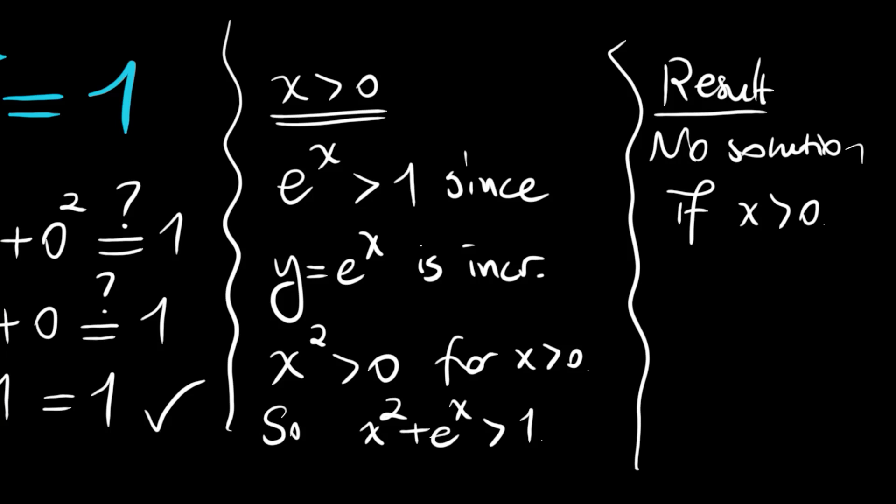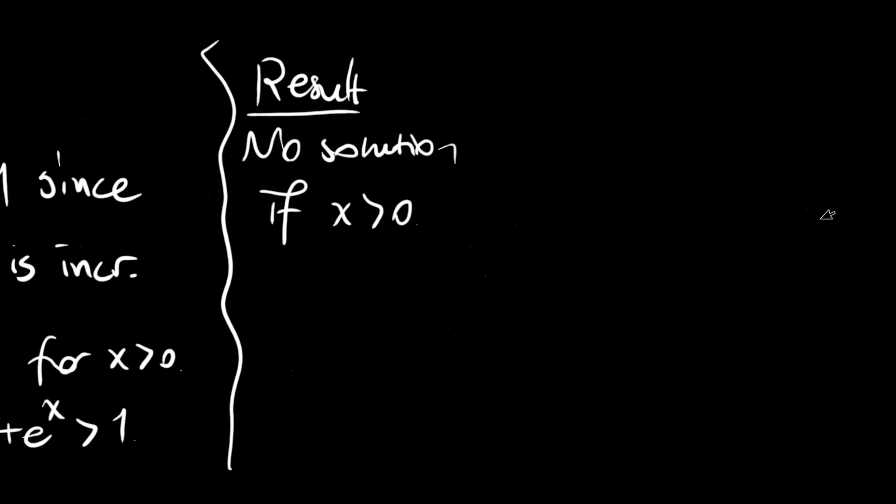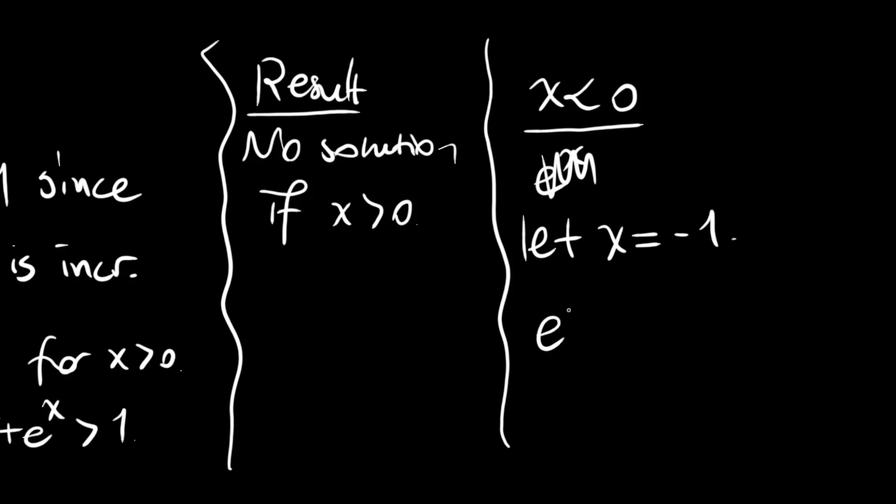But for negative numbers there may be roots. Let x be less than 0. For x = -1, then e^x is e^(-1), which is 1 over e.